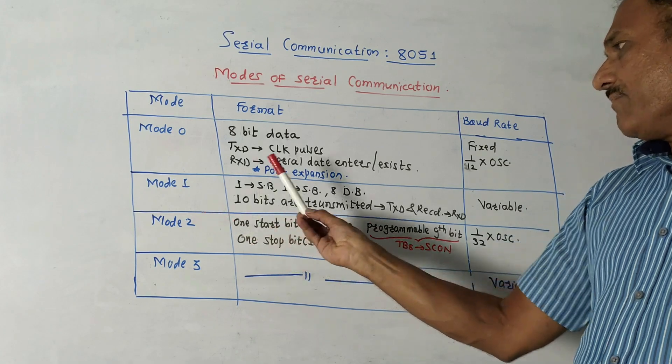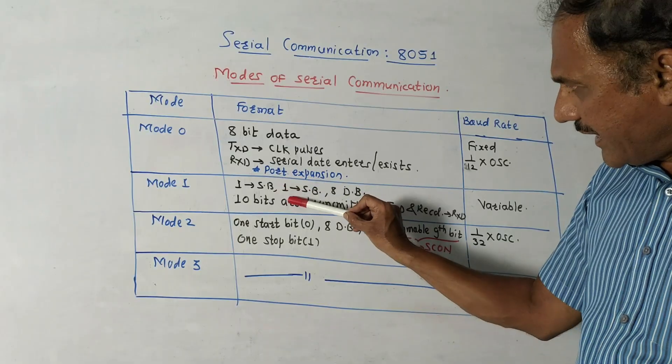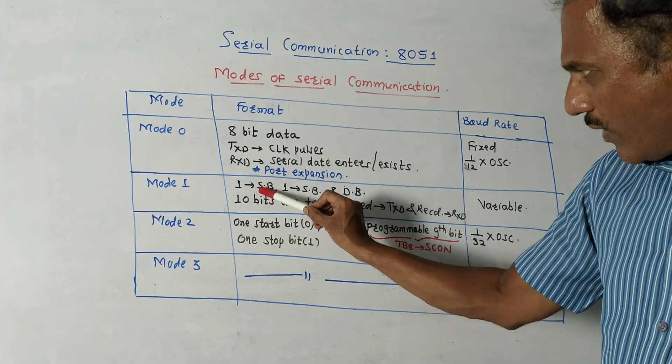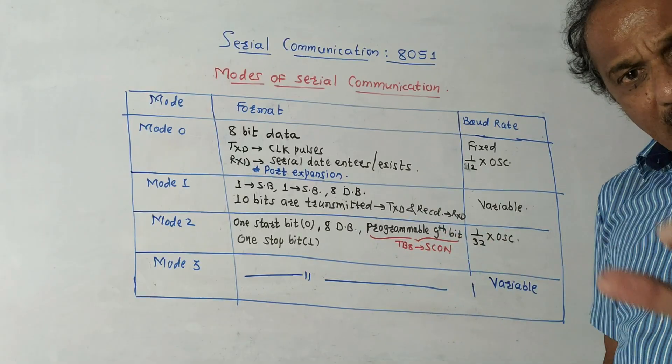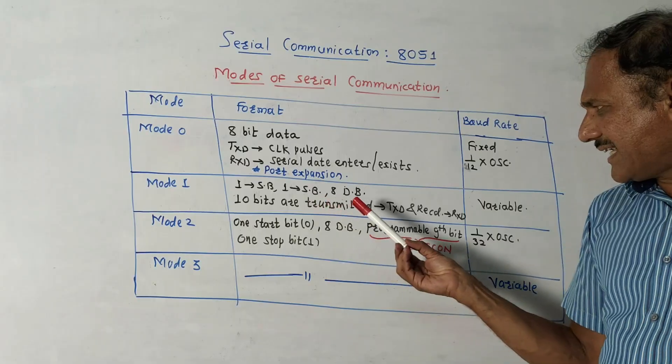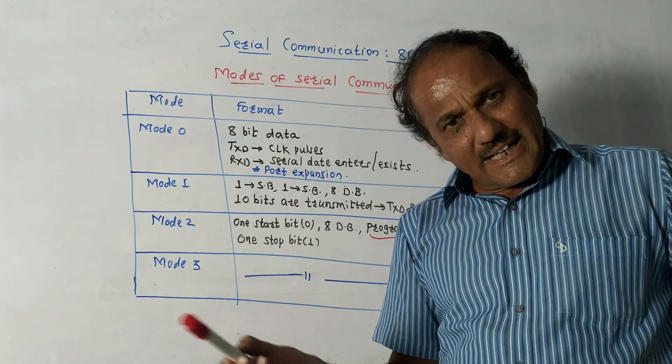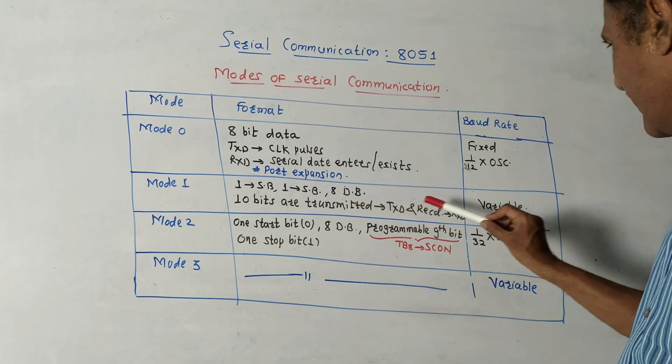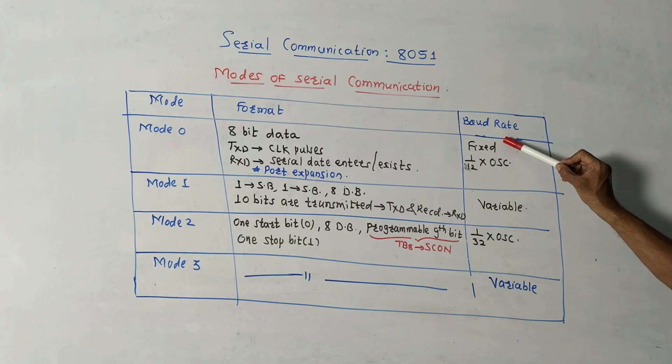Then mode 1 operation. It consists of one start bit, SB means start bit. It requires one stop bit. So one start bit, one stop bit, and eight data bits are required. So total there are 10 bits: one start bit, one stop bit, and eight data bits. So 10 bits are transmitted using TXD pin or as well as 10 bits can be received using RXD pin. In mode 1, the baud rate is variable, whereas mode 0 baud rate is fixed, which is 1 by 12 times oscillator frequency.